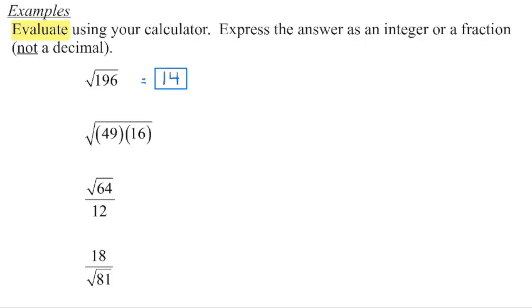Evaluate means to find the numerical value. So we can just enter the square root of 196 into the calculator. It is a perfect square, we'll get a value of 14. Now we could also enter this into the calculator, but there's a faster way of doing this. If you know your perfect squares, we can see that 49 is a perfect square, as is 16. So by dividing that product up into its perfect squares, we know the square root of 49 is 7, we know the square root of 16 is 4. We're multiplying them together, we know that 4 times 7 is 28, so that's the value.